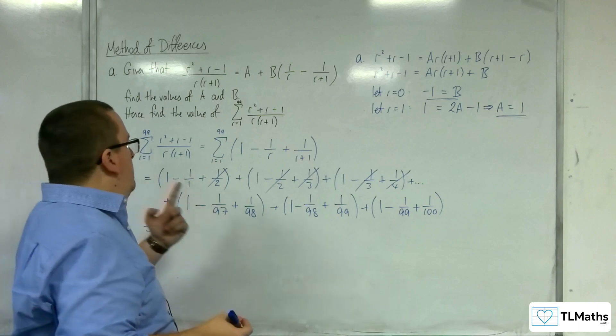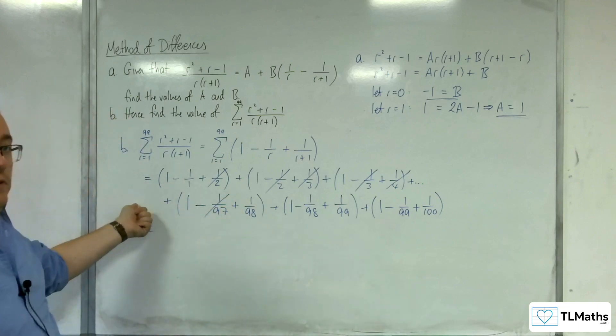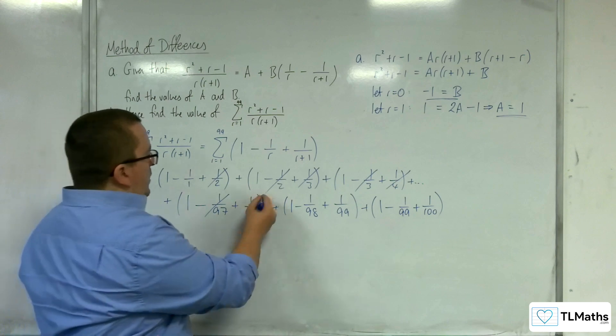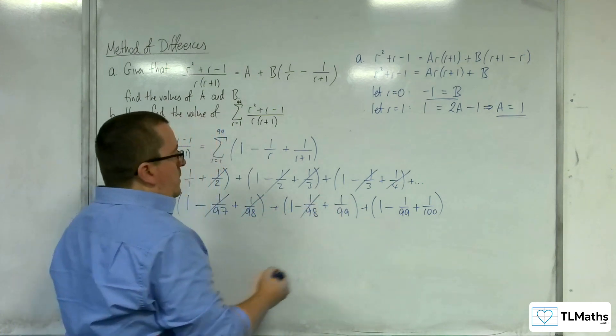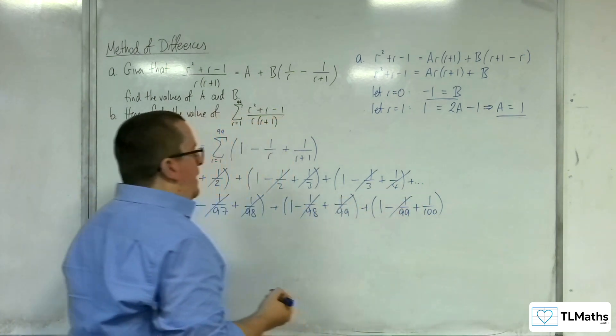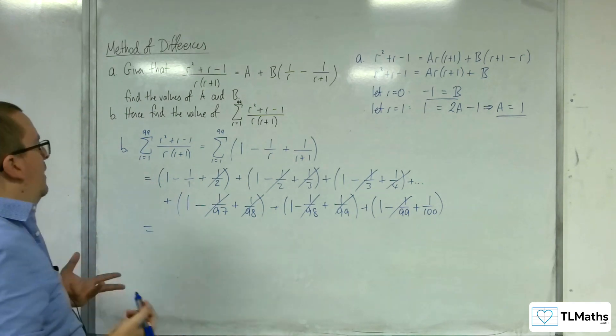We're going to have the minus 1 over 97 cancelling with a 1 over 97 in the previous term. The 1 over 98 is going to cancel there. The 1 over 99 is going to cancel there. So what have I got left?